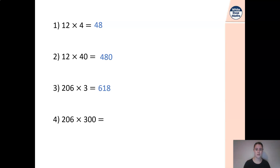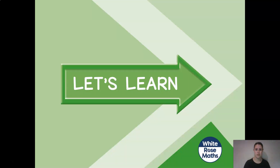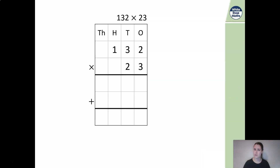Now we know here that we're doing 206 times by 300, which means we just need to make our answer 100 times bigger. Therefore, it's 61,800. Well done if you got some of those or all of those correct.